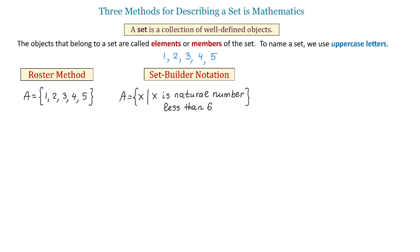So, we read this as set A is the set of all elements X, such that X is a natural number less than 6.